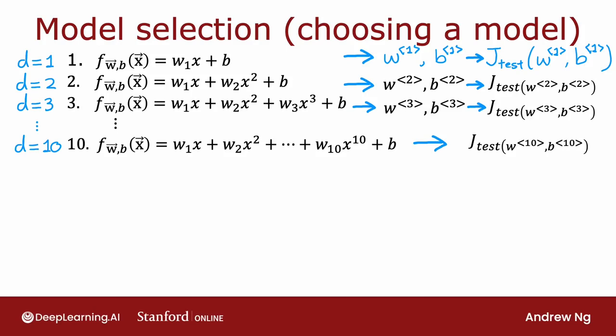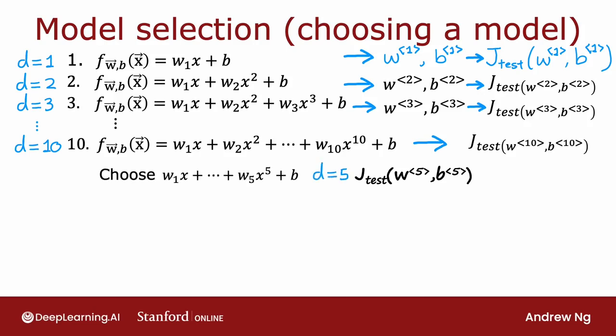One procedure you could try—though this turns out not to be the best procedure—is to look at all of these J test values and see which one gives you the lowest value. Say you find that J test for the fifth-order polynomial, w5, b5, turns out to be the lowest. In that case, you might decide that d equals 5 does best and choose that model for your application.